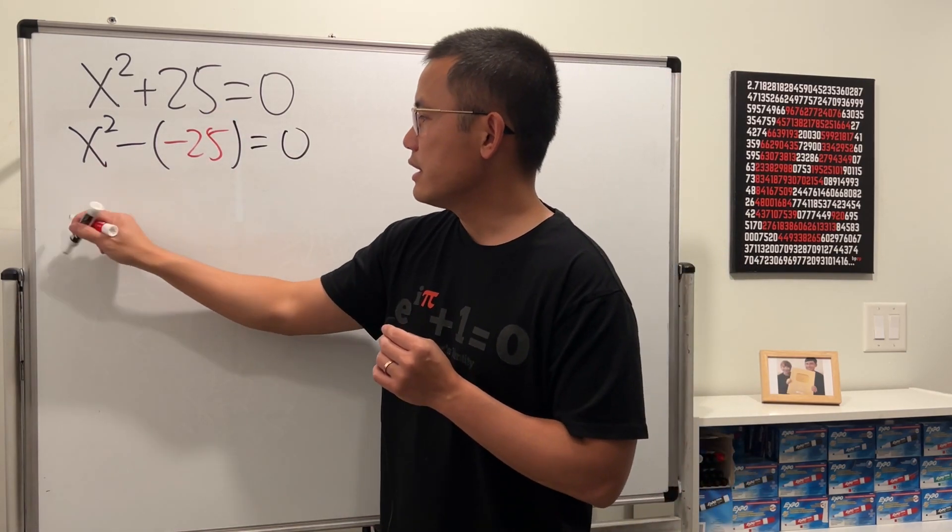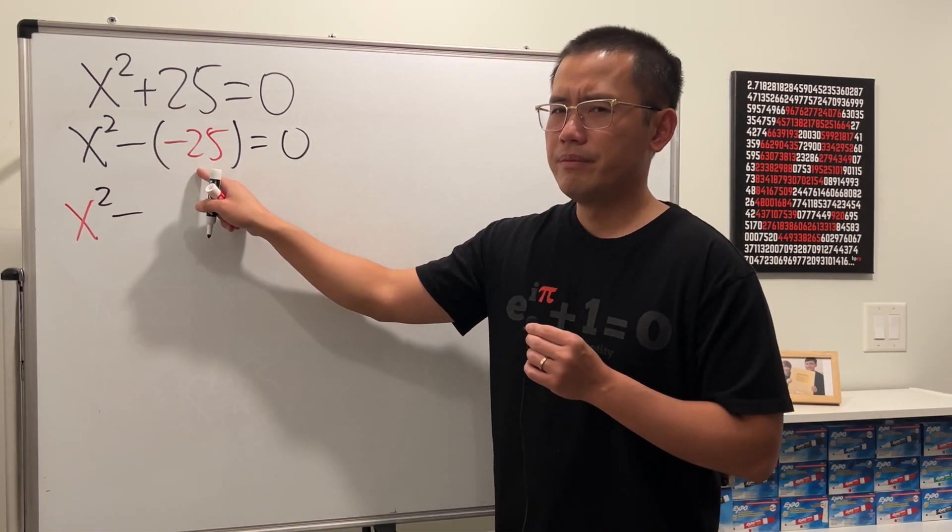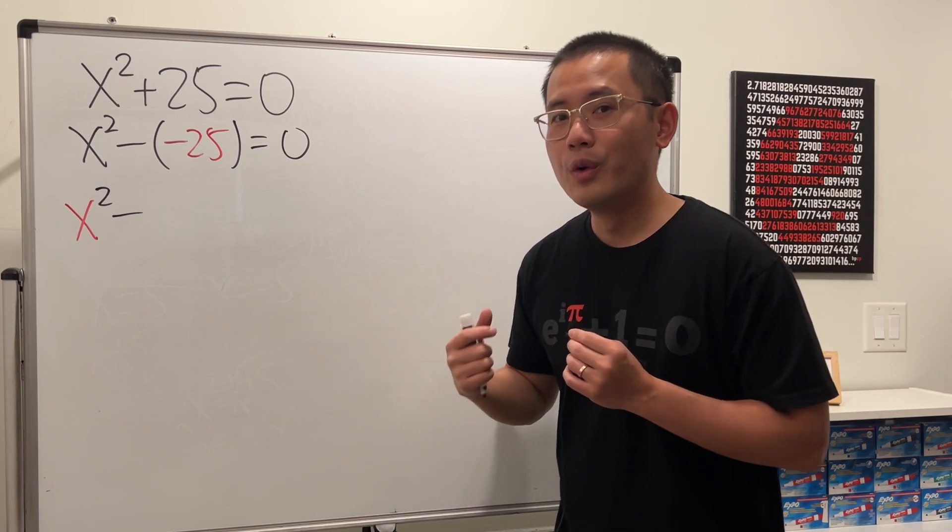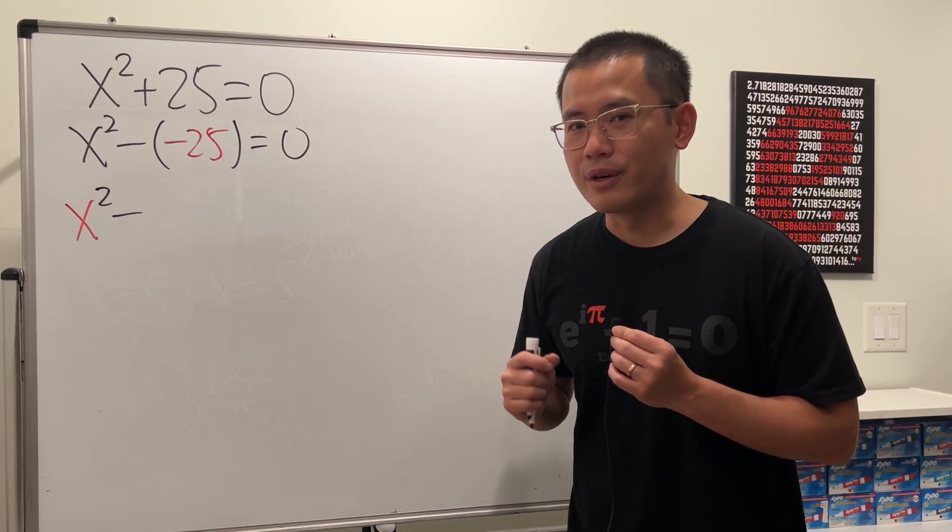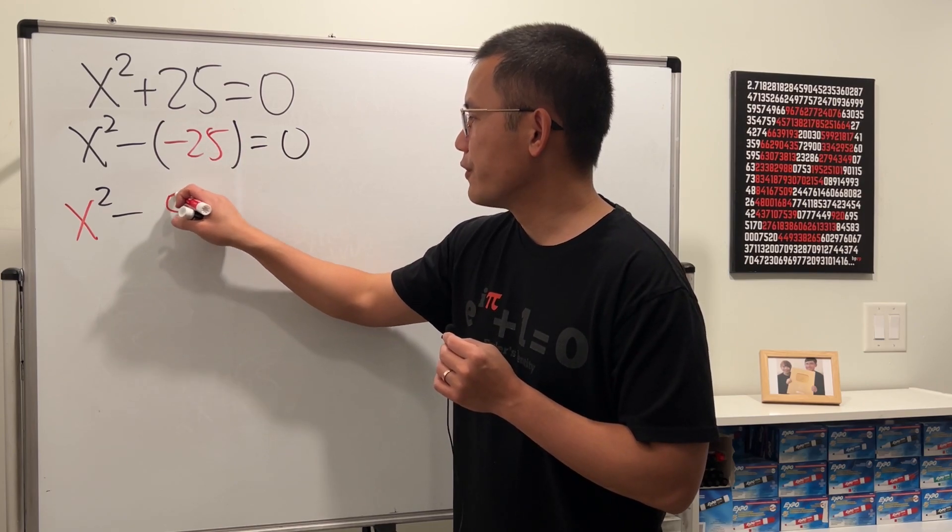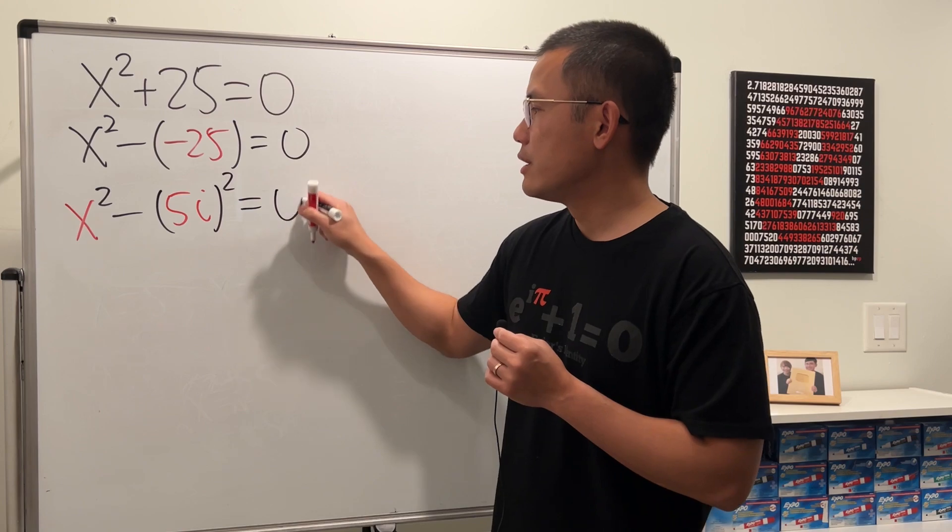So this is still the same as that. Now, this is x². And then minus. What square will give us negative 25 though? Well, we will have to use the imaginary number i. So here's the deal. This right here is equal to (5i)².